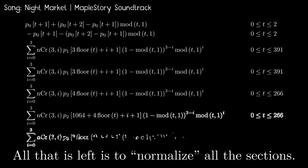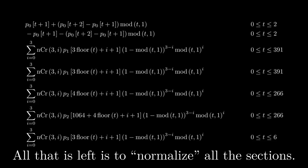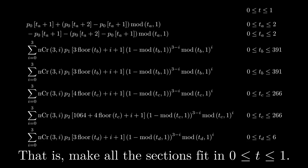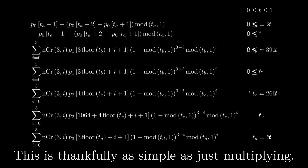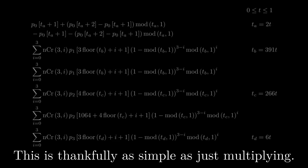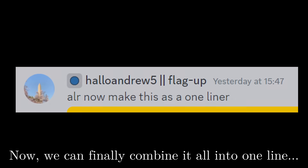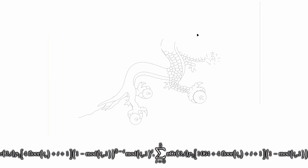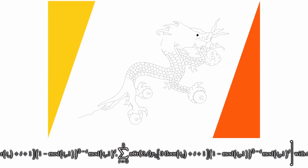All that's left is to normalize all the sections — that is, make all sections fit in the range T between 0 and 1 inclusive. This is thankfully as simple as just multiplying. Now you can finally combine it all into one line. It's scrolling way too fast for people to read — it's one line but a really long line. Anyway, the link to this graph is in the description if you want to see this one-liner in its full glory.